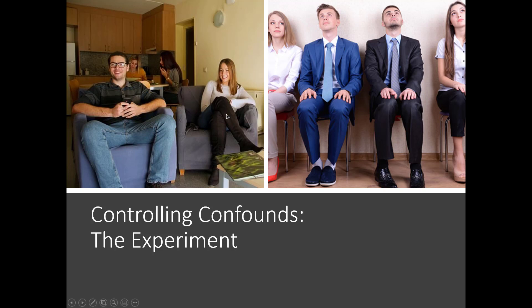Looking at those two pictures, you can already say to yourself: wait a minute, there are big differences here. The furniture looks more comfortable, there are fewer people, they're not squeezed in, these people seem dressed more formally, the color of the walls is different — the environment is different in every possible way. So if these people report being more stressed out, was it because of the sound? The chairs? The proximity of other people? We have too many confounding variables to determine cause. However, if we had two groups in absolutely identical situations except that one was exposed to white noise and one was not, then any differences in stress scores could be attributed to the noise. That's the key to the experiment: control the confounds and manipulate only a single variable at a time.